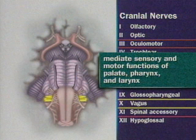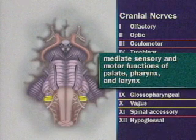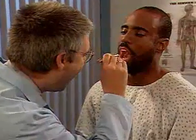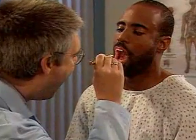Cranial nerves 9 and 10, which are the glossopharyngeal and vagus nerves, mediate the sensory and motor functions of the palate, pharynx, and larynx. To test these nerves, ask the patient to say 'ah' or yawn as you observe the soft palate and the uvula. The soft palate should rise promptly and symmetrically, and the uvula should remain midline.